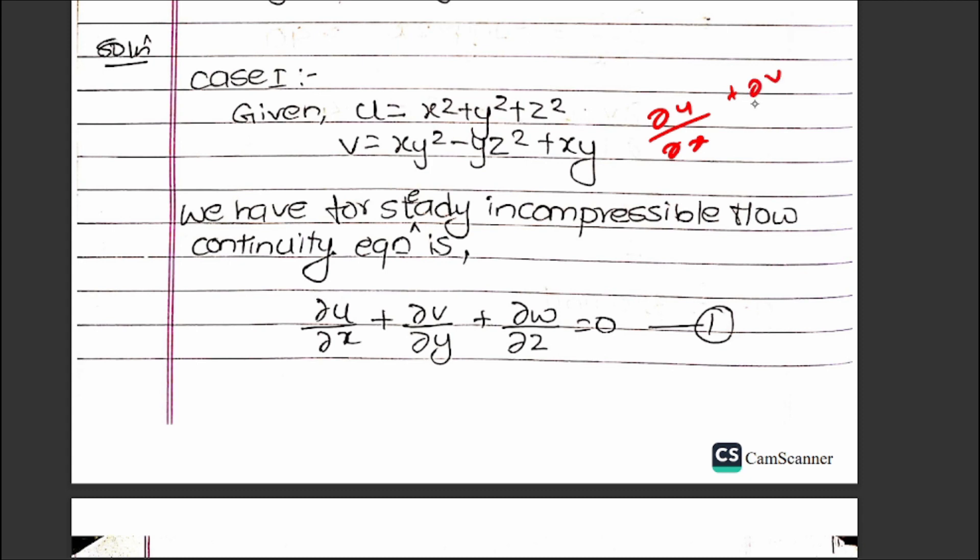∂u/∂x + ∂v/∂y + ∂w/∂z = 0. So first I'm going to find ∂u/∂x. ∂u/∂x is given by the derivative of x² + y² + z² with respect to x. y and z are constant, so this equals 2x.